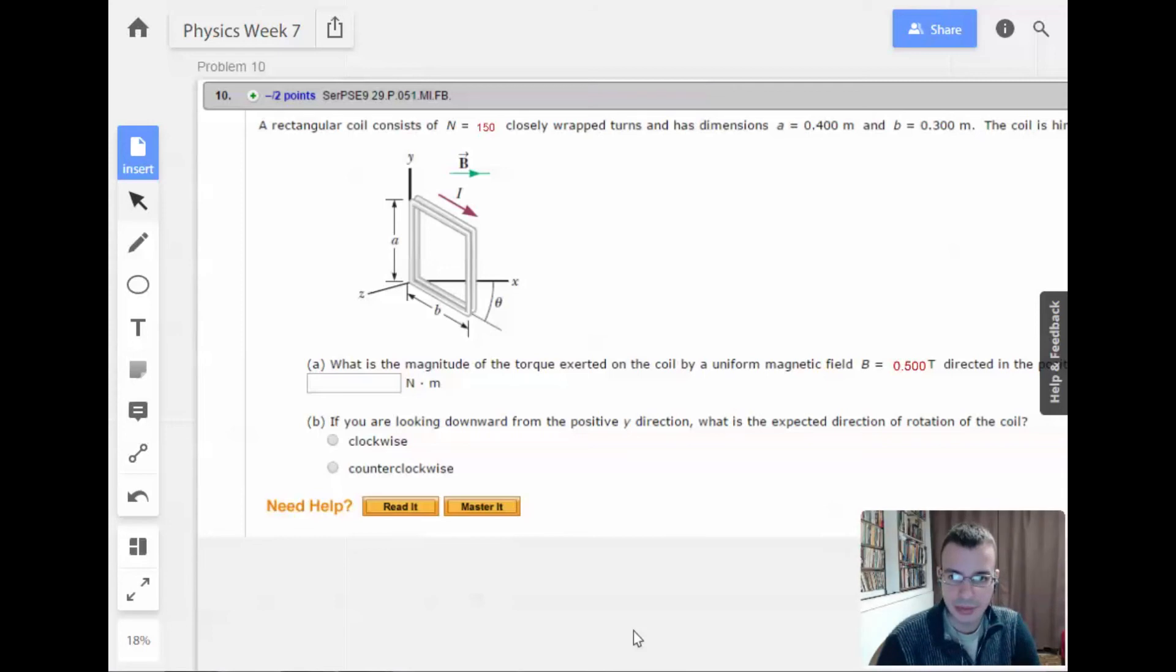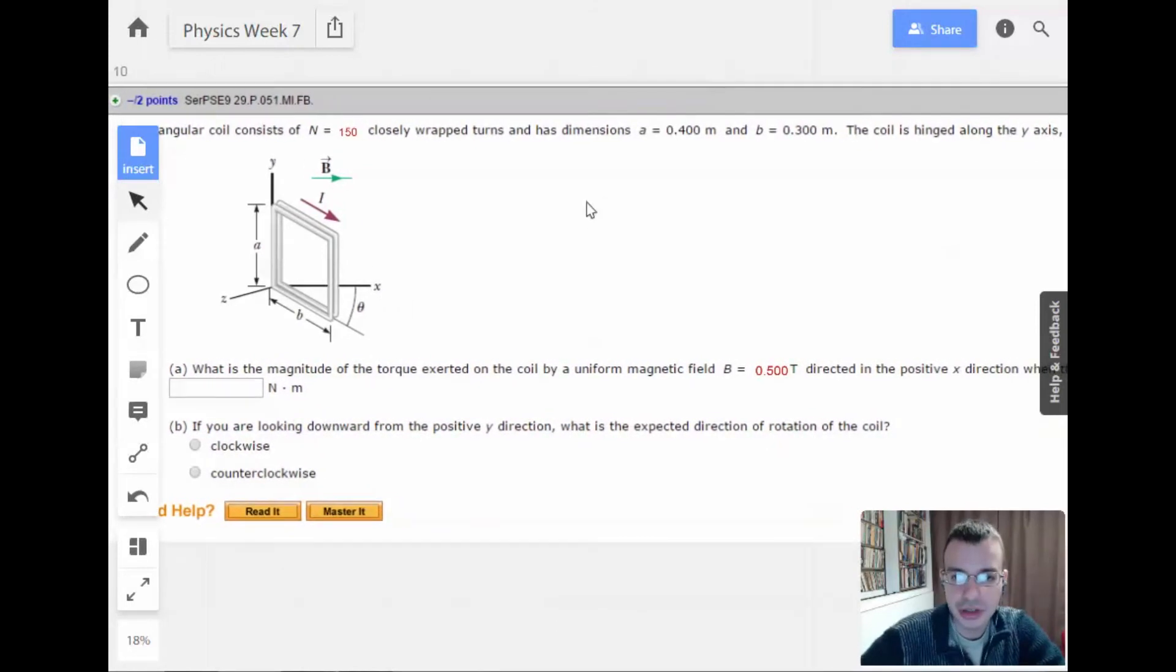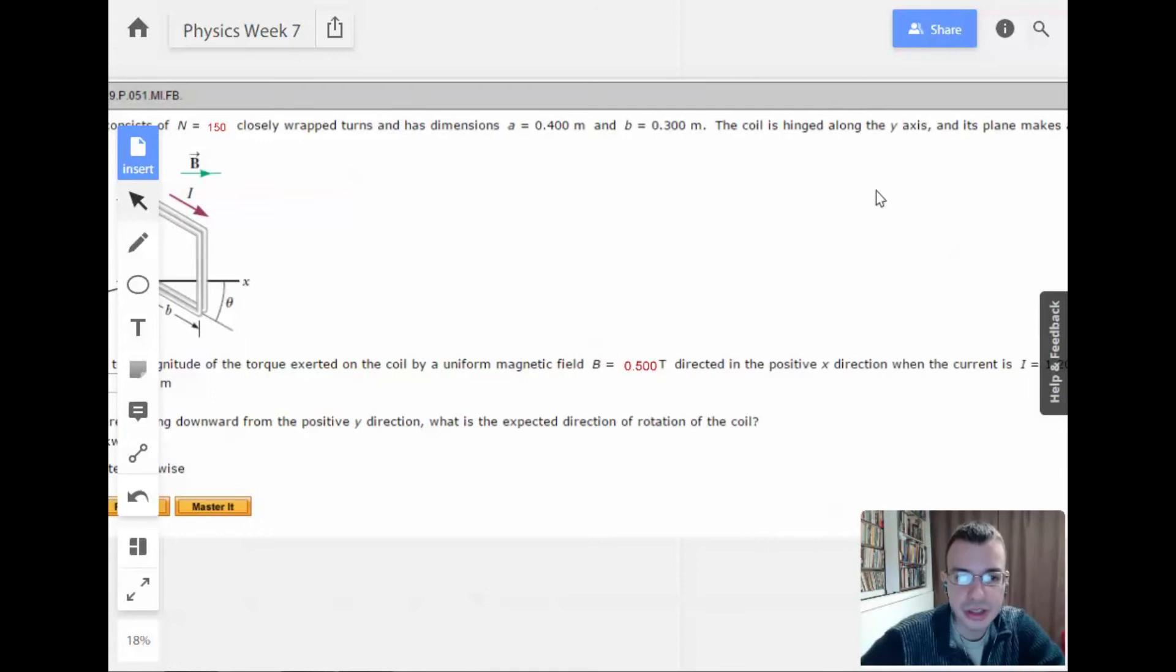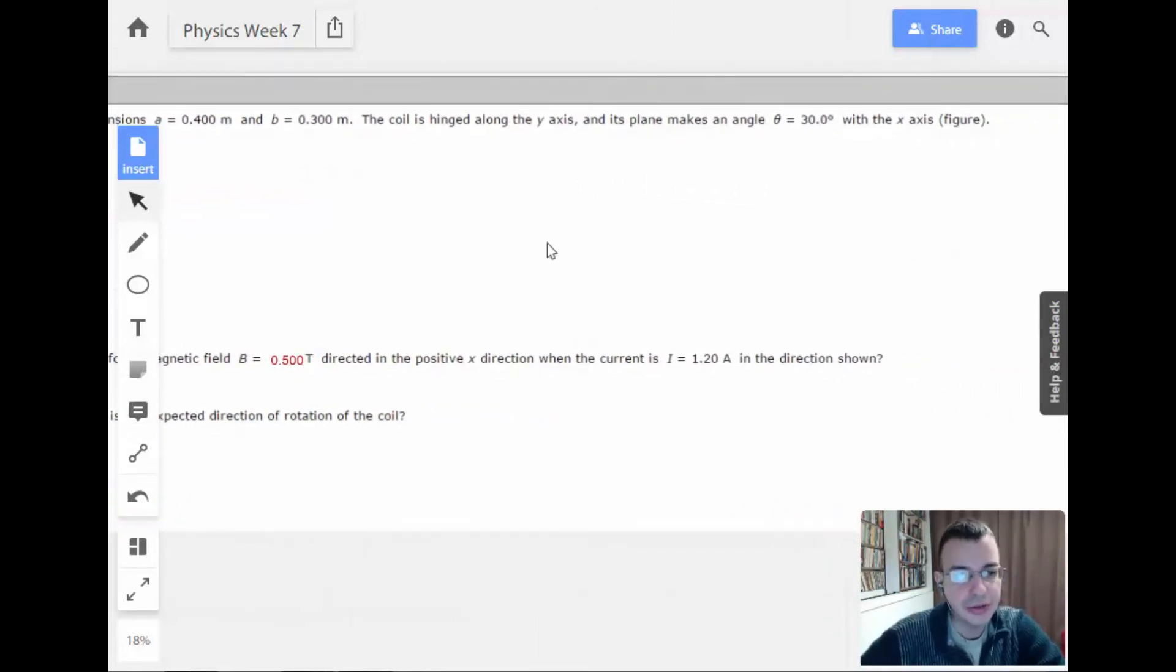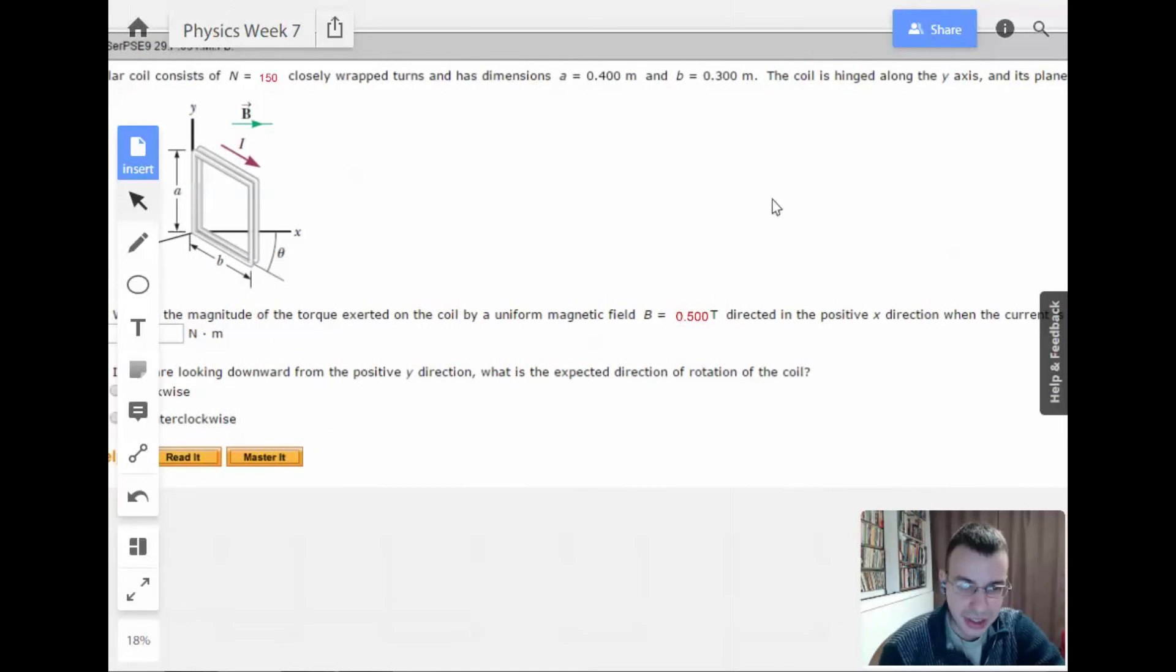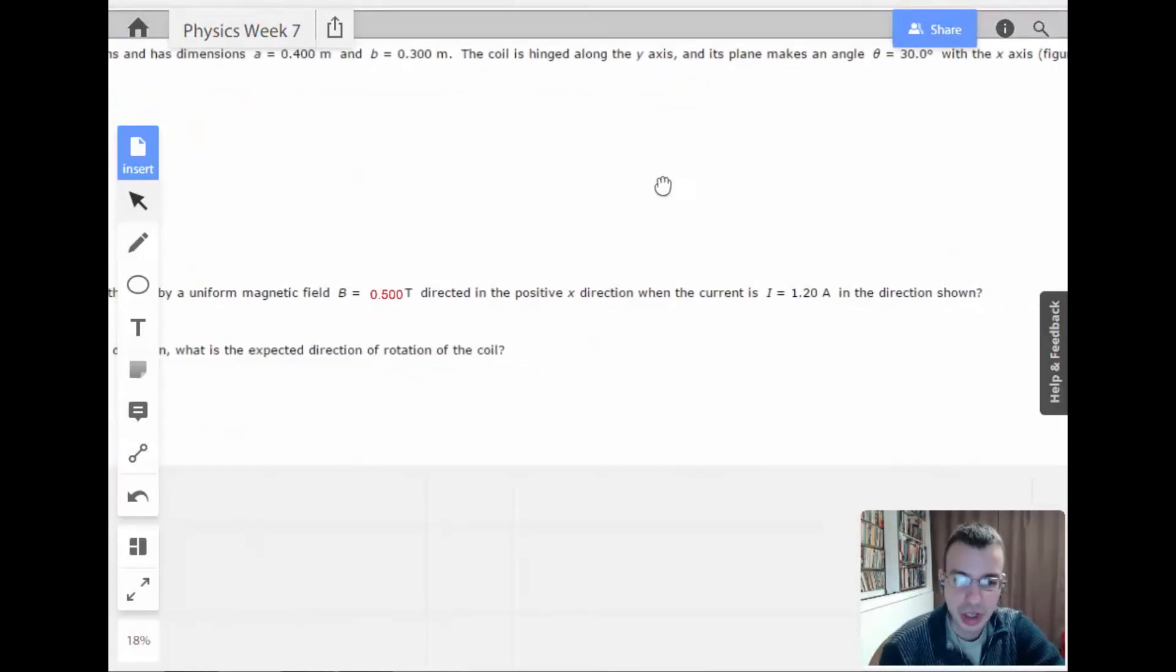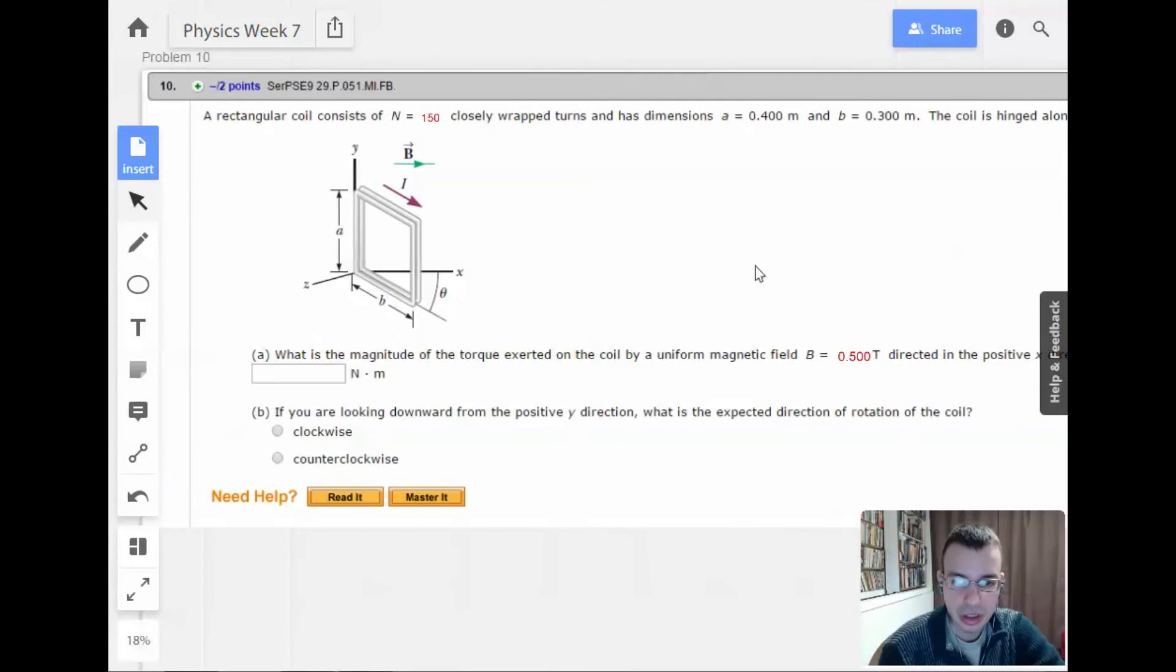Week 7, problem 10. A rectangular coil consists of 150 closely wrapped turns and has dimensions of 0.4 meters by 0.3 meters. The coil is hinged along the y-axis and its plane makes an angle of 30 degrees with the x-axis. What is the magnitude of the torque exerted on the coil by a uniform magnetic field directed in the positive x direction when the current is 1.2 amps in the direction shown?